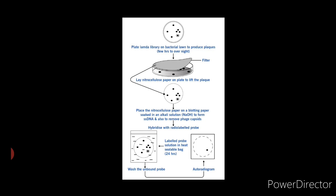The replica filter is dried and then soaked in sodium hydroxide solution. It has two effects: first, the phage capsids are lysed and the proteins are removed; and second, the double-stranded phage DNA is denatured to single-stranded.